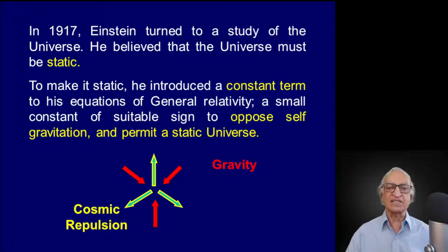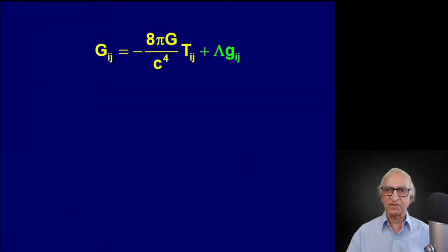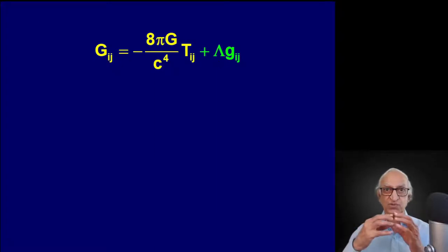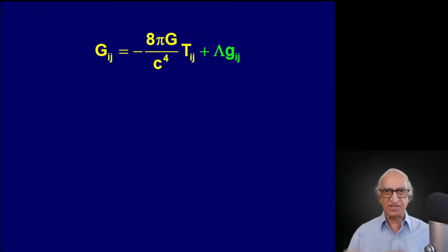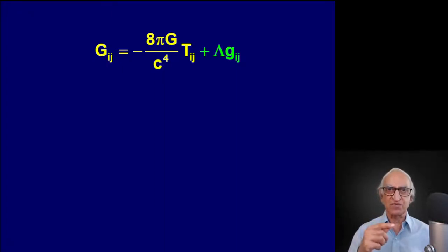This was in 1917. What Einstein did was take his equation as published in 1915-16 and add a constant term lambda in order to produce this cosmic repulsion. We shall see in the later lectures how and why this constant term actually produces a repulsive gravity.